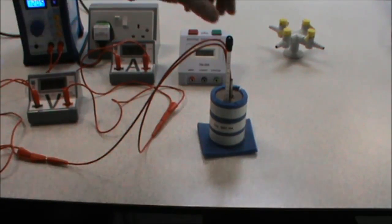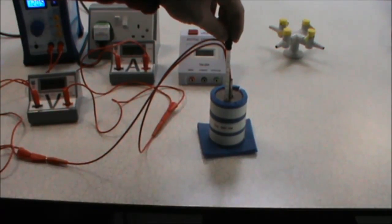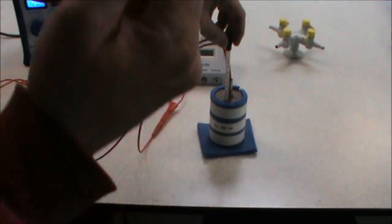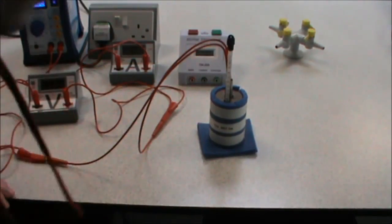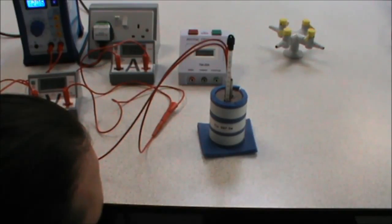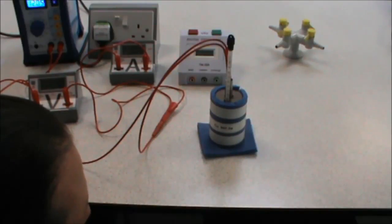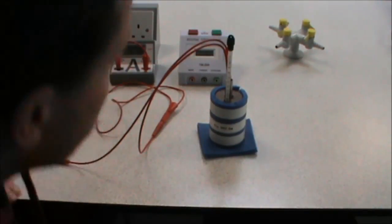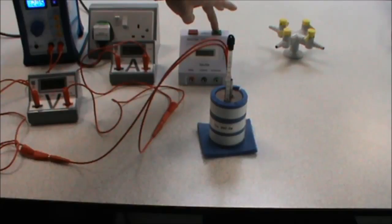We then measure the starting temperature of the block. To do this, you need to get your eye level with the block and make sure you don't have any parallax error. Reading the temperature of the block, our starting temperature for this experiment is 20 degrees, we now start the stop clock.